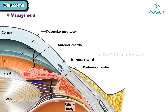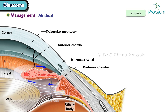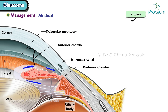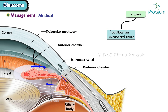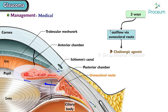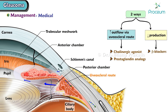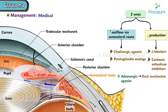Management of primary glaucoma — medical management: there are two ways of managing glaucoma medically. First, by increasing outflow via the uveoscleral route using cholinergic agonists and prostaglandin analogs. Second, by decreasing production using beta blockers and carbonic anhydrase inhibitors. Adrenergic agonists work by a dual mechanism: decreasing production as well as increasing uveoscleral outflow.